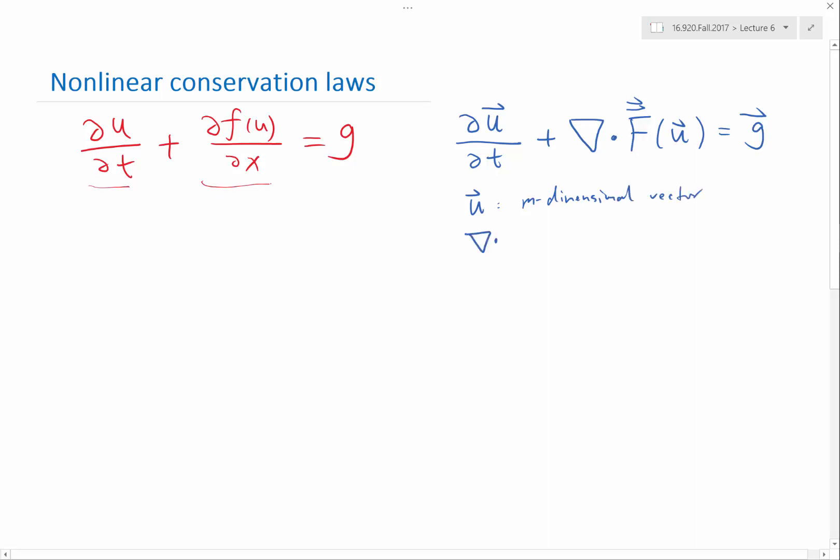So here, this inverted triangle is the, let's say, d-dimensional divergence. And this f would be have to be what? It has to be a tensor that is a d by m-dimensional tensor.